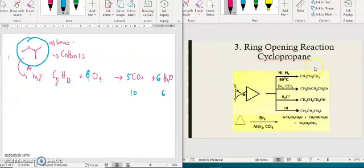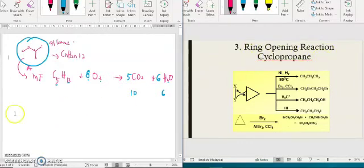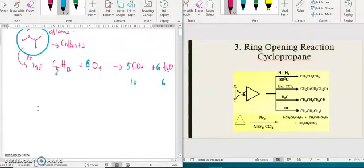For the ring opening reactions, we focus only on the cyclopropane. Kenapa? Because the cyclopropane is a small ring, atau cyclic structure, closed end structure yang kecil. So kenapa kita akan focus pada yang kecil? Sebab yang kecil macam ni, small ring structure ni, dia adalah sangat reactive. So that's why your ring opening reactions can occur. Generally, alkene dan cycloalkane, dia react menggunakan cara yang sama.